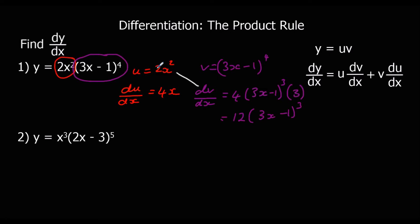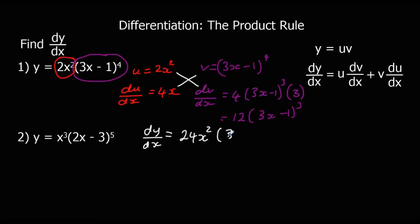To find dy/dx we do u times dv/dx plus v times du/dx. So dy/dx equals 2x² times 12 — that's 24x²(3x−1)³ — plus v times du/dx, which is 4x times (3x−1)⁴. And there's our dy/dx, there's our answer.